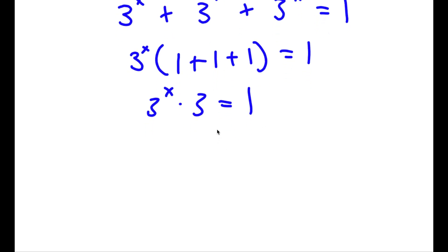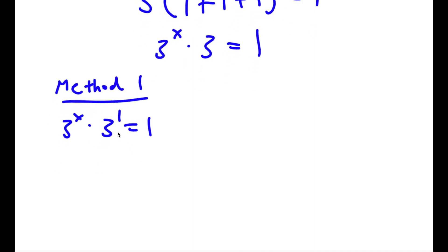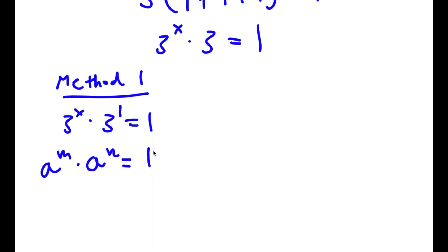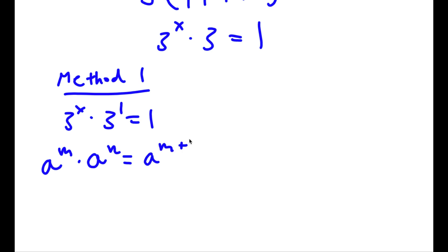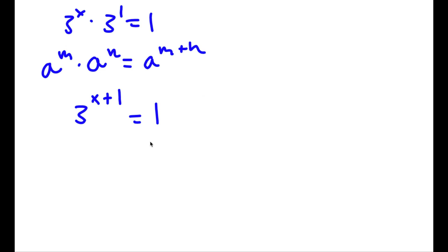Now from here I have two methods. For Method 1: the 3 here is the same as 3 to the power of 1. Using the rule a^m times a^n equals a^(m+n), we get 3^x times 3^1 equals 3^(x+1). This equals 1, and 1 is the same as 3 to the power of 0, because anything to the power of 0 equals 1. So now I have 3^(x+1) equals 3^0.